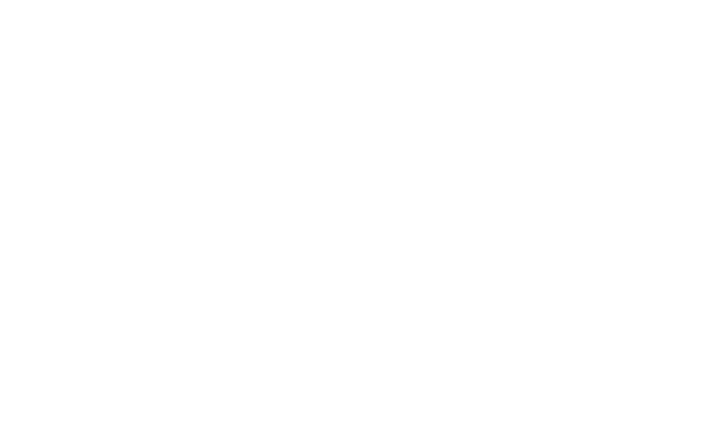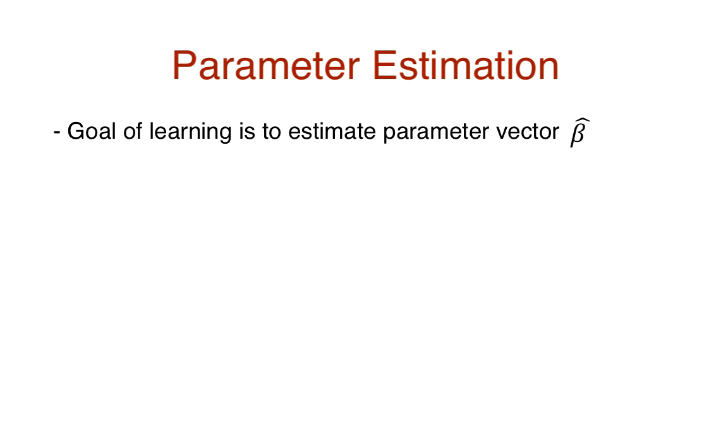So let's talk about parameter estimation. The goal of learning in machine learning is basically to estimate parameters in order to make predictions. The parameters in the equation of a two-class classification in logistic regression is the beta hat vector as in the log odds equation.